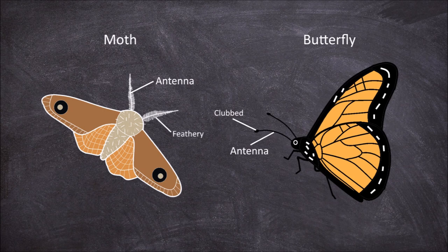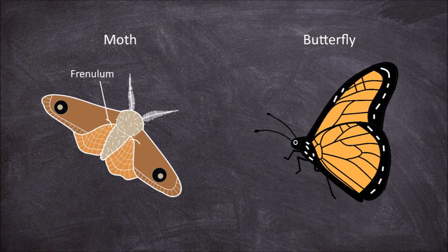Moths also possess one feature that butterflies don't: the presence of frenulum on the hind wings. Frenulum are filaments that stick out from the hind wings and join with barbs found on the forewings. This allows for wing coupling so both wings can be moved together in flight.